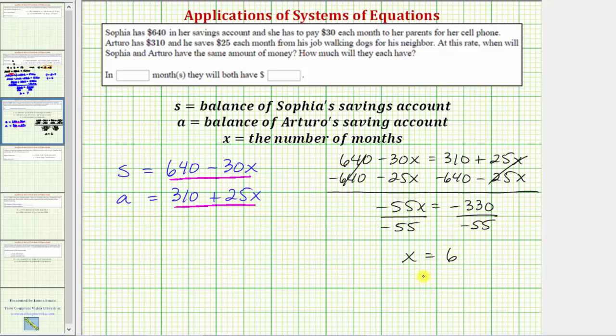So now we know after six months or in six months the two balances will be the same. To determine the common balance we need to substitute 6 for x in either equation because both equations should give us the same balance. Let's go ahead and show that.